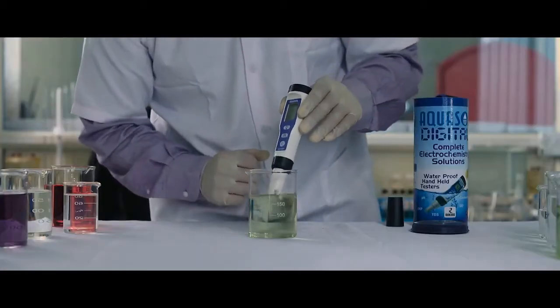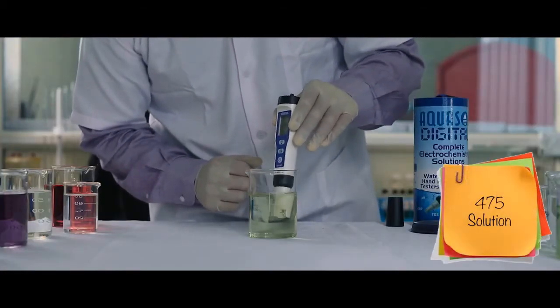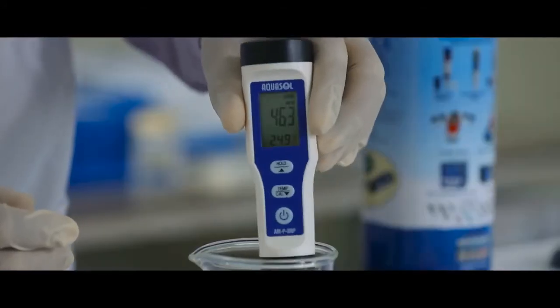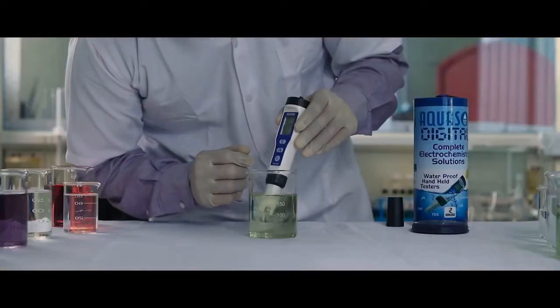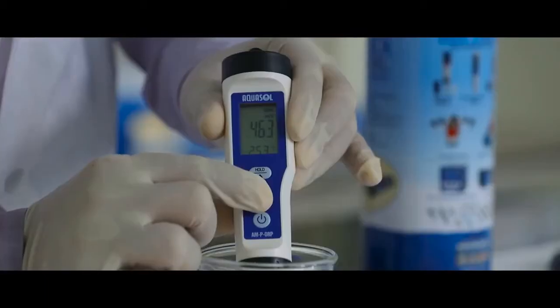Calibration: Dip the electrode in the 475 standard buffer solution. Stir gently for a stable reading. Press and hold the CAL key to start calibration.